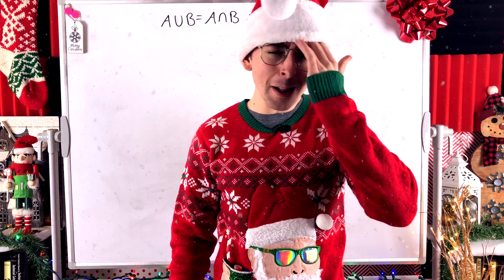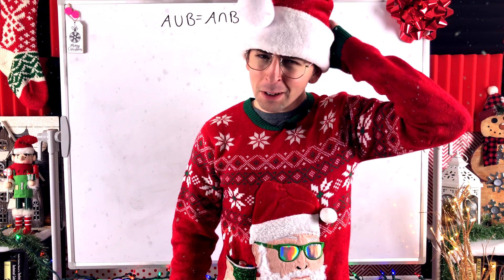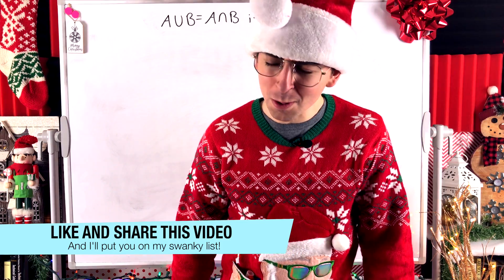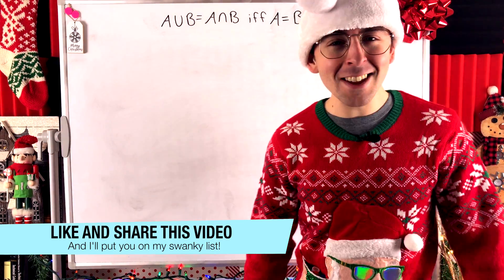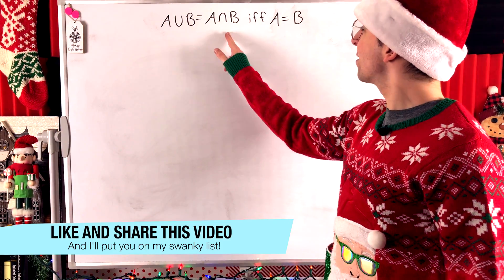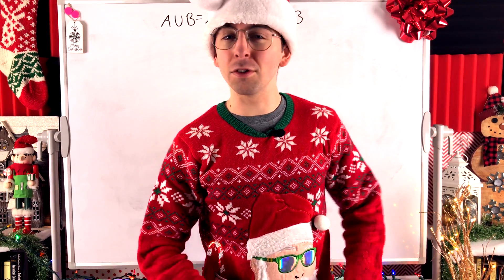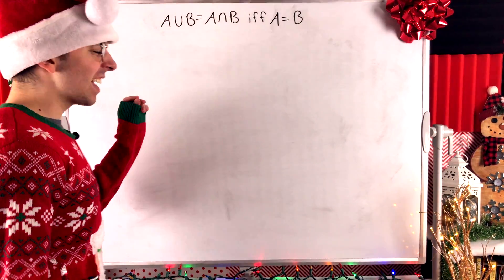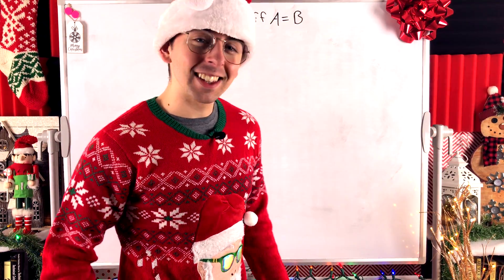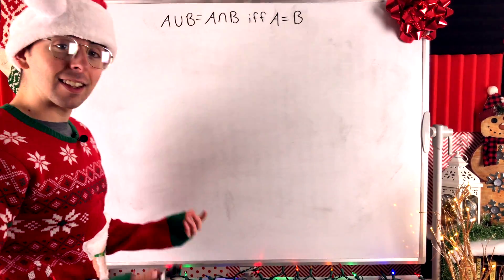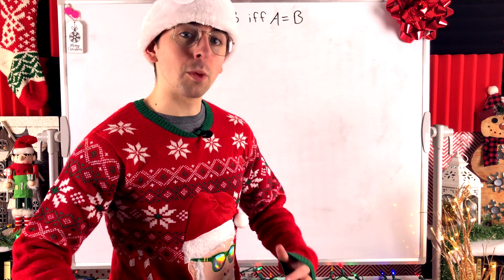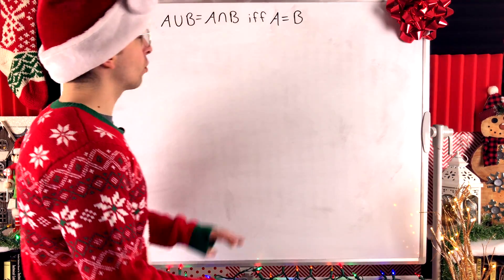Set equality, how lovely are your elementary proofs. A union B is equal to A intersect B if and only if A equals B. Seems pretty obvious, and that's what we'll be proving in today's Wrath of Math lesson. This is a nice basic set theory proof, so if you want to try out some of your newfound skills with set theory proofs, give this one a try.